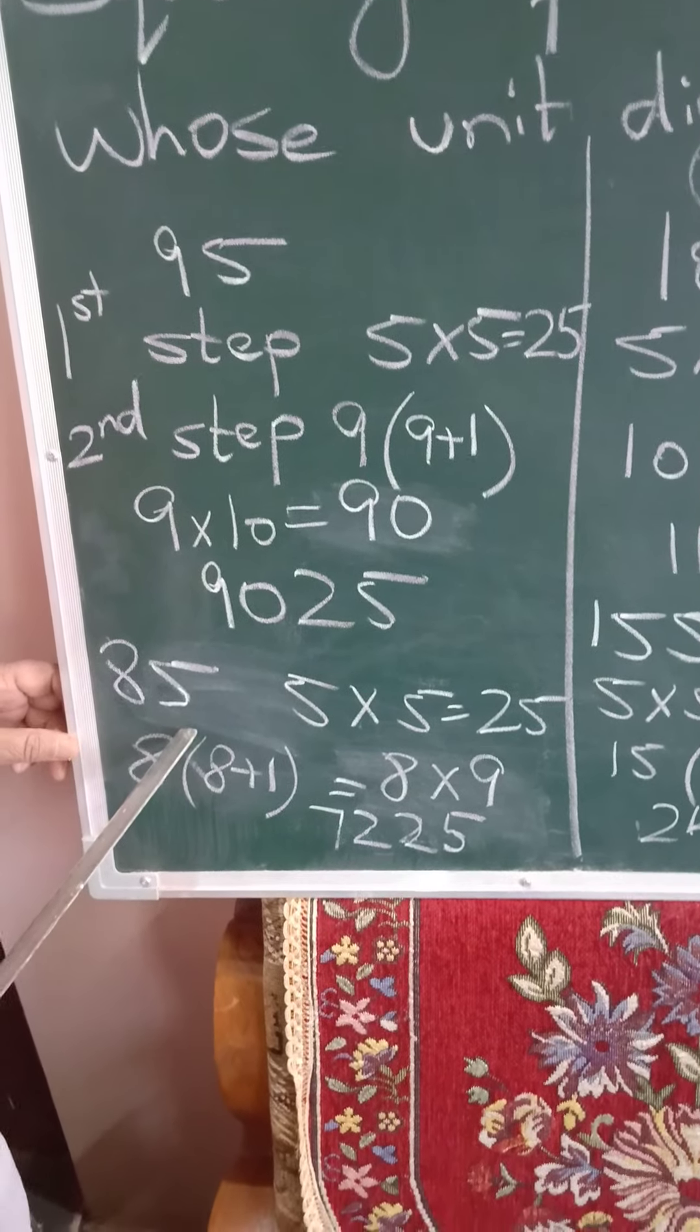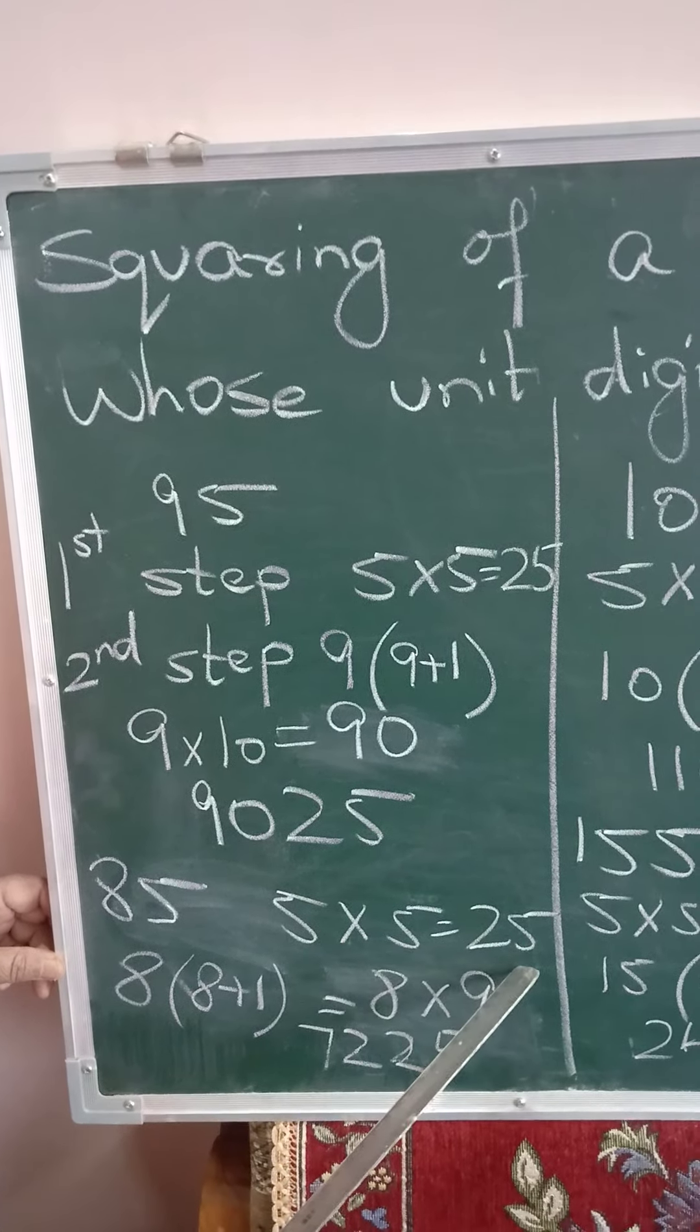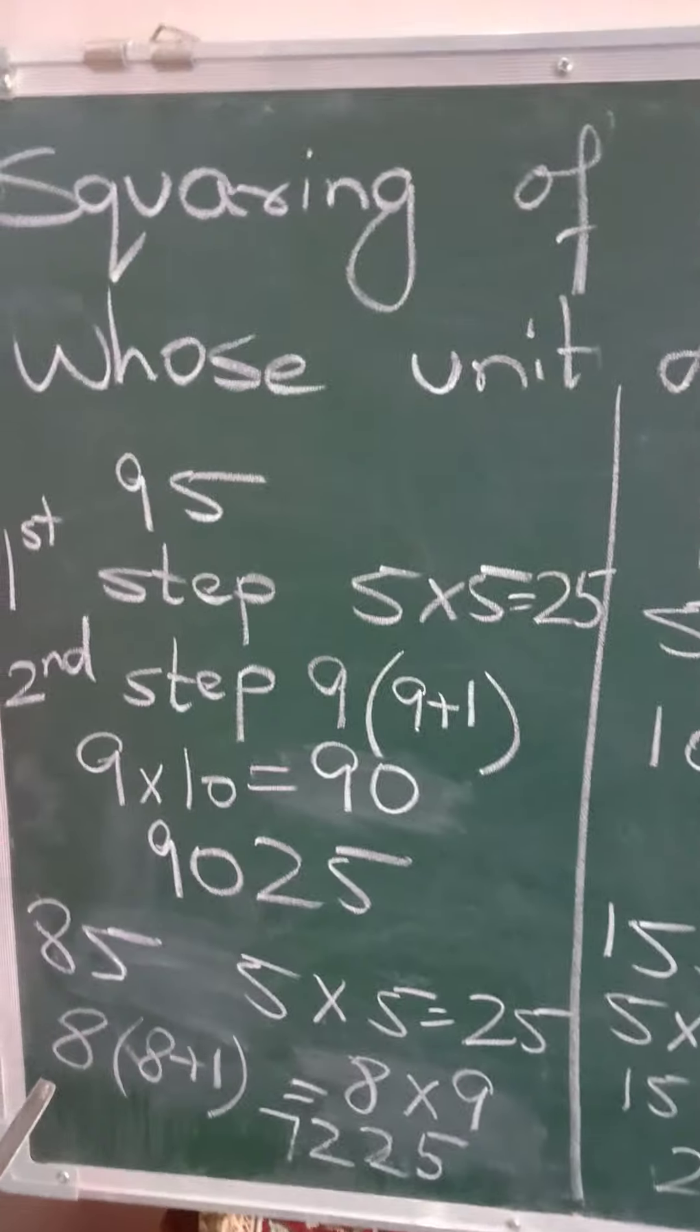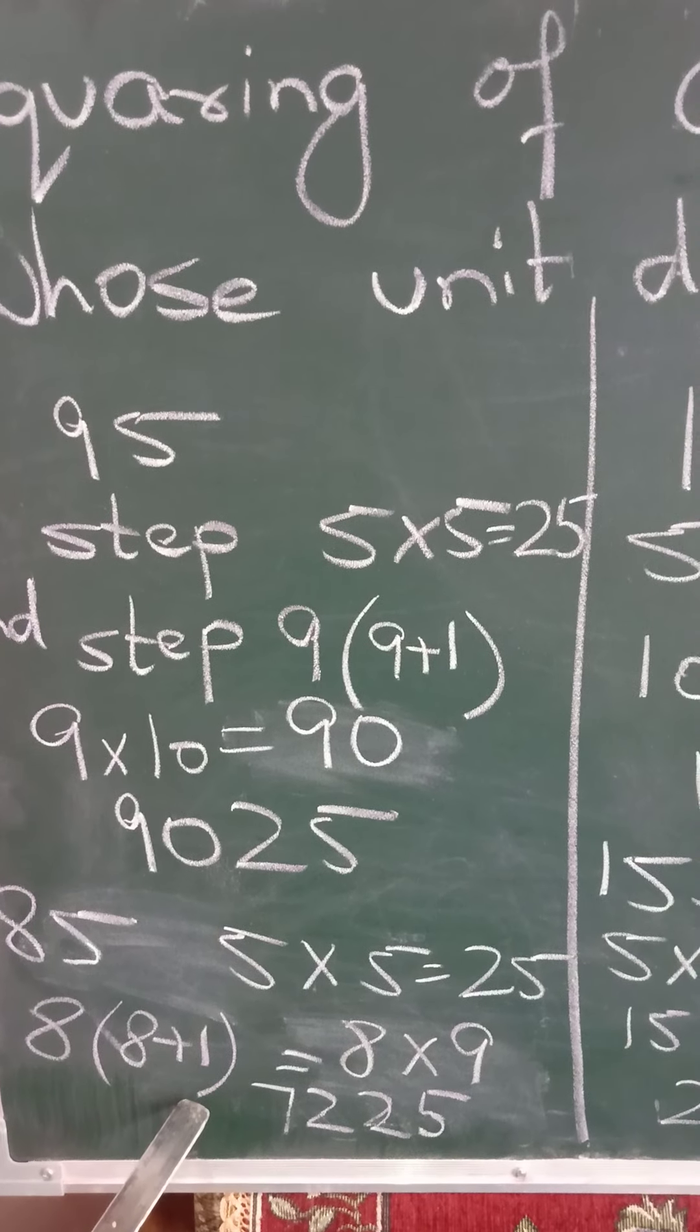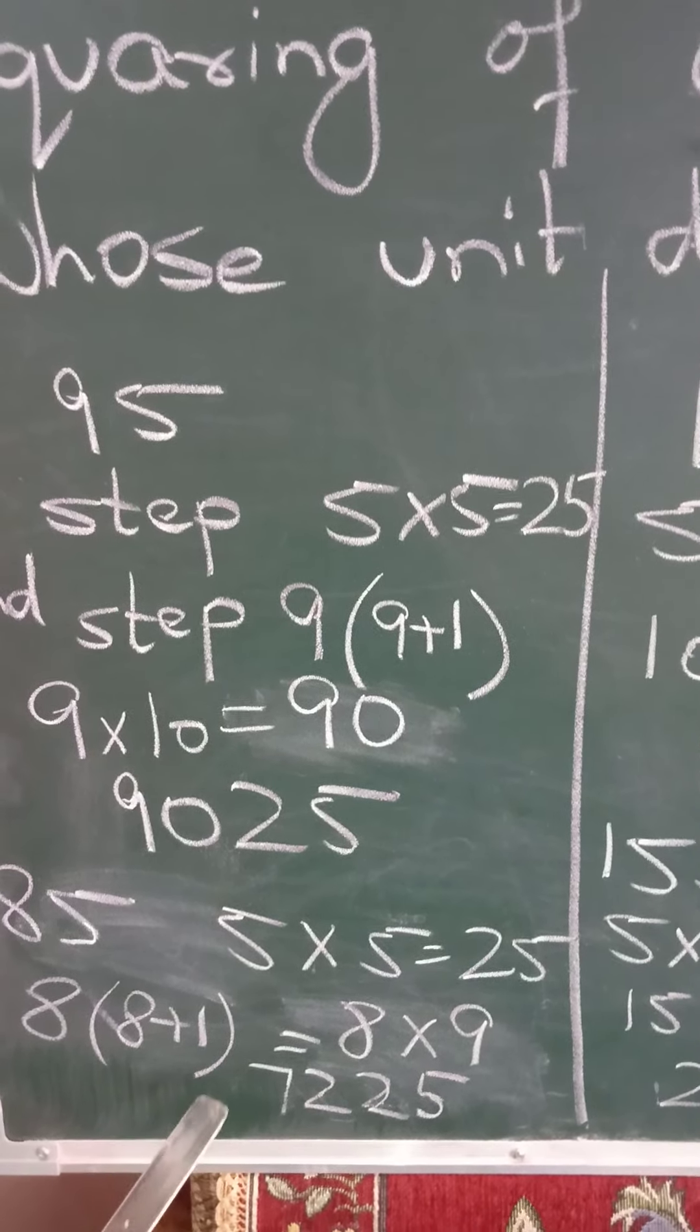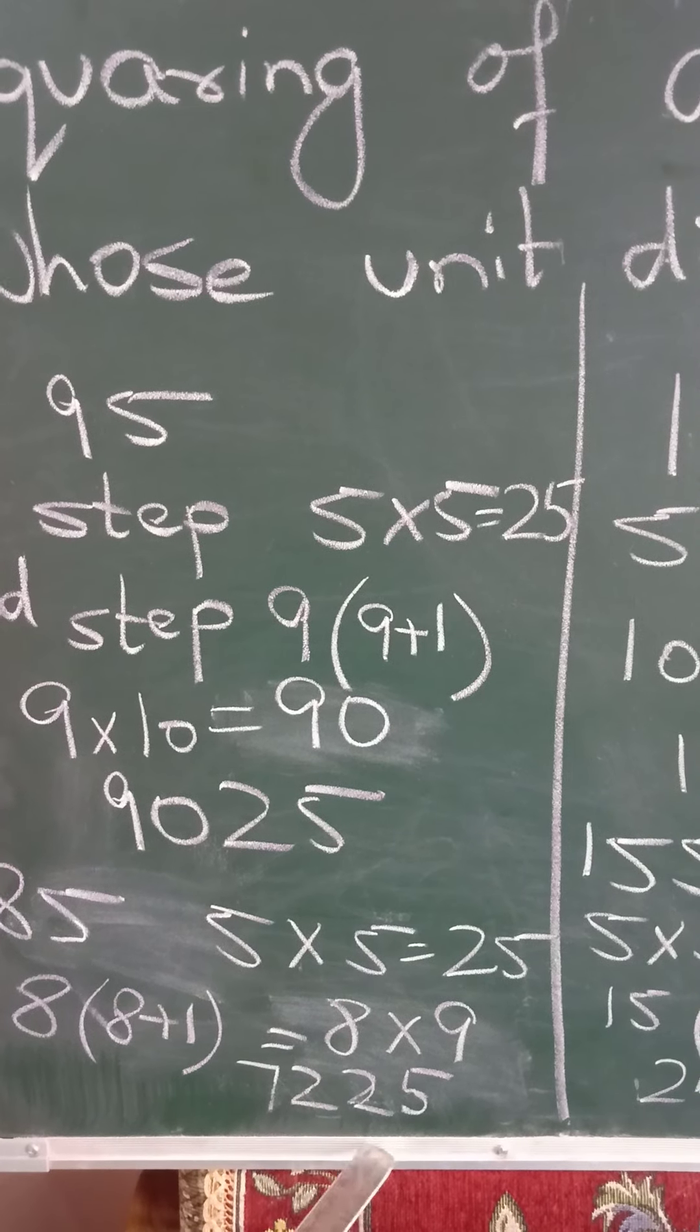Again, the first step, 5 into 5, 25. And the second step, 8 multiplied by 8 plus 1. I told you the next number, plus 1. Then 8 nines are 72. 7225.